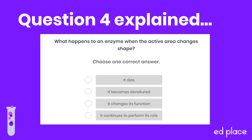Question four: what happens to an enzyme when the active area changes shape? This question uses a slightly different word to describe the active site, but the answer should still be pretty obvious — it becomes denatured. As described in the lesson, you can never say an enzyme dies because enzymes are not living. Their function is always specific, so it never changes. And obviously an enzyme would not be able to continue its role if the active site changed shape, because the lock and key theory would no longer work.